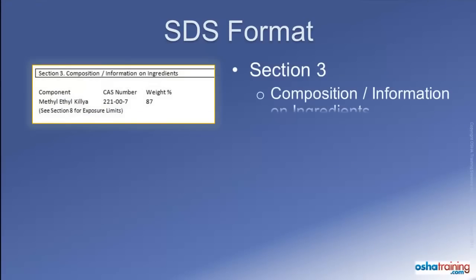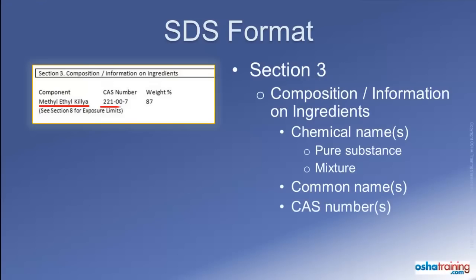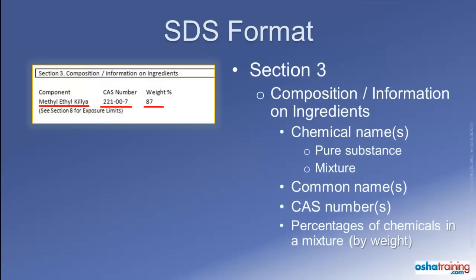Section 3 of Safety Data Sheets, titled Composition and Information on Ingredients, identifies chemicals contained in the product. This could be a single ingredient for a pure substance or two or more ingredients if the product is a mixture or contains impurities or stabilizers that contribute to the hazards. You will also find the common name, any synonyms, and the applicable Chemical Abstracts Services, or CAS number. When the product is a mixture of hazardous chemicals, the Safety Data Sheet will also list the concentration of all hazardous ingredients expressed in either percentages or ranges by weight. For chemicals where a trade secret is claimed, there will be a statement indicating the specific chemical identity has been withheld.